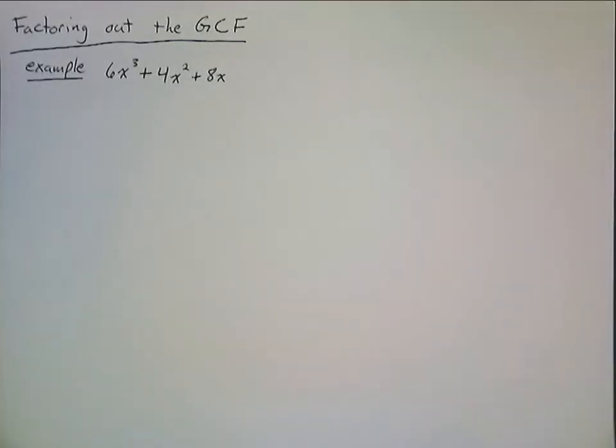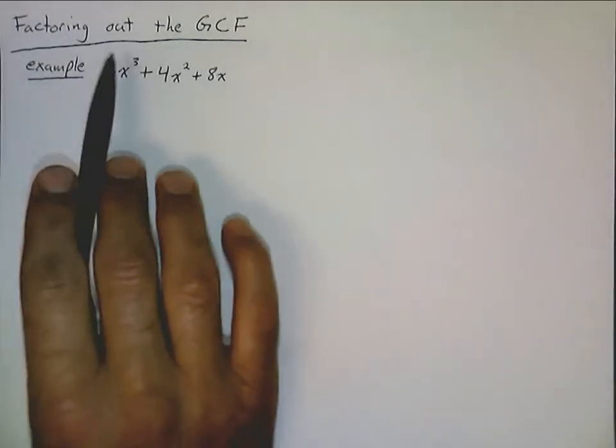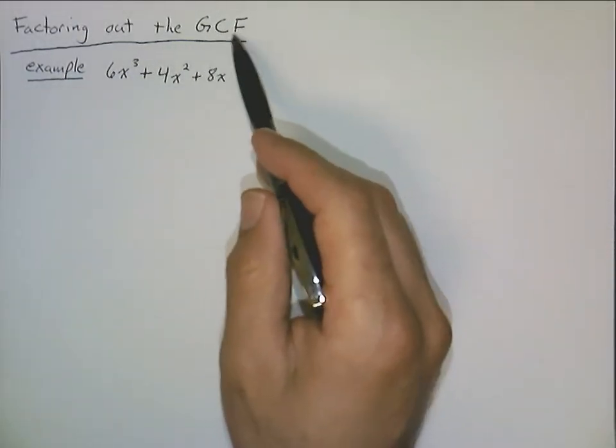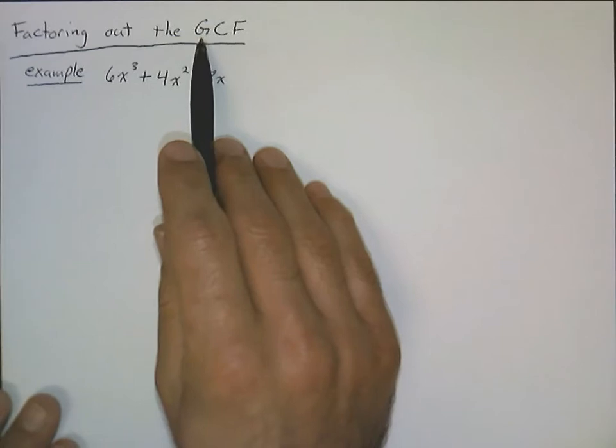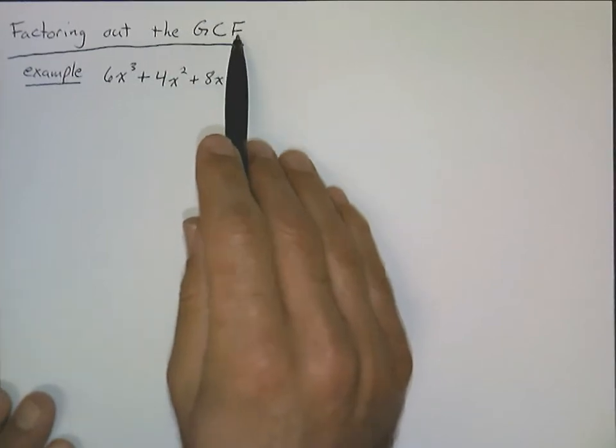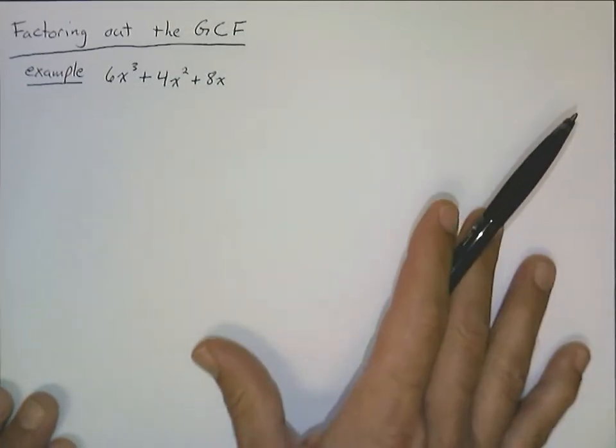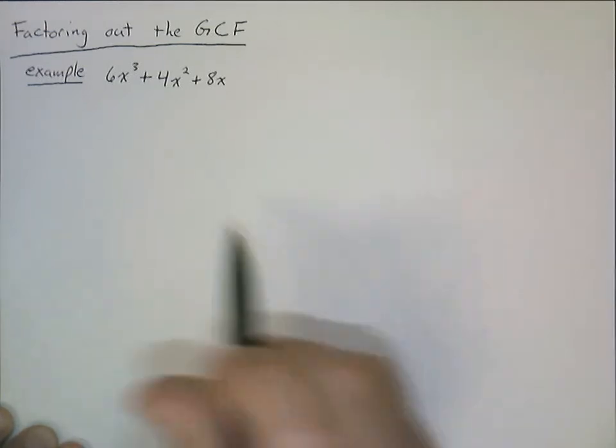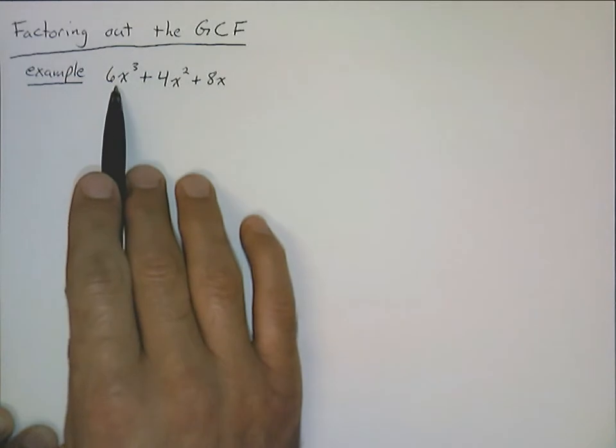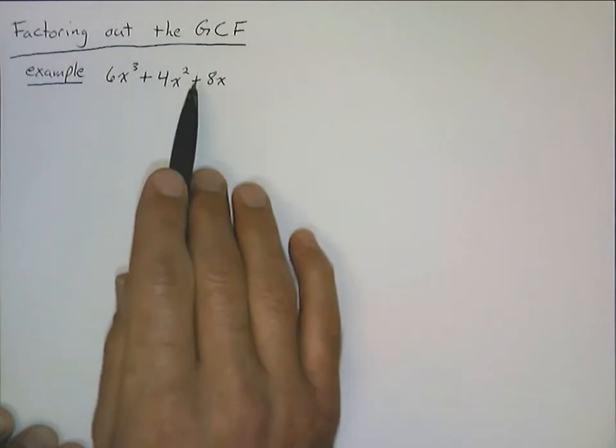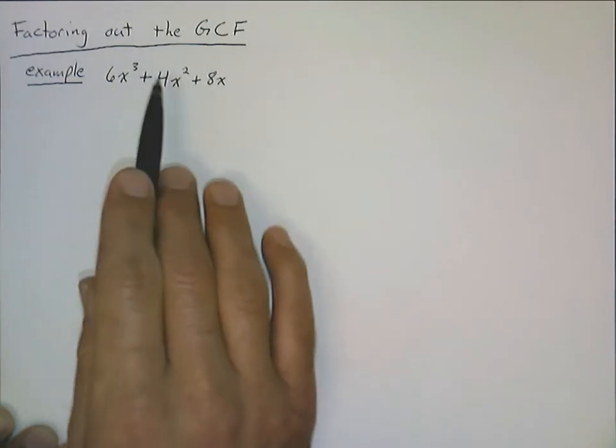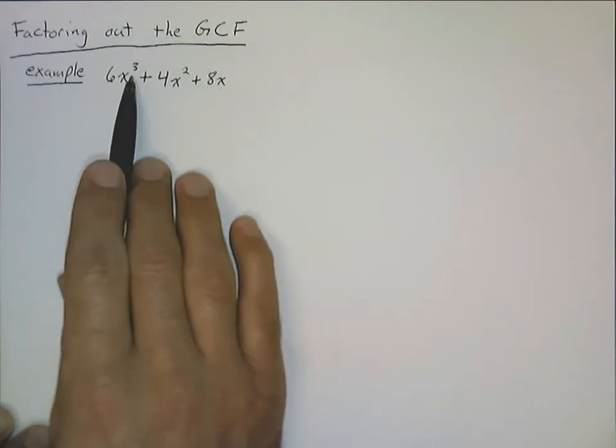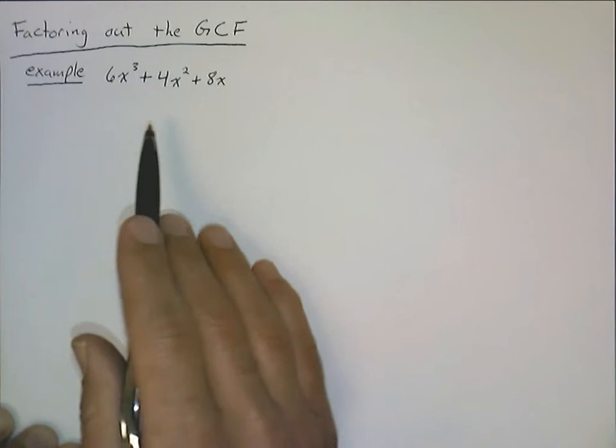But the big thing that we really want to get to with polynomials is basically what's called factoring. And factoring is really just undoing the distributive property. And let me show you what I mean by that. First kind of factoring we're going to look at is called factoring out the GCF. And hopefully you remember GCF, that's a little acronym for greatest common factor. You did a bunch of that with just numbers before in your life. But now we can also do the same thing with polynomials. So here's an example. We've got 6x cubed plus 4x squared plus 8x. Three terms. It's a trinomial.